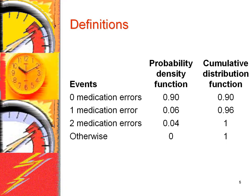In this example, the number of medication errors are sorted and listed to the left. The first column shows a probability density function. At each value, it provides the probability of the event listed. For example, 90% of patients have no medication errors, 6% of patients have one medication error, and 4% have two medication errors.